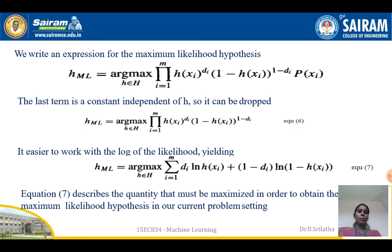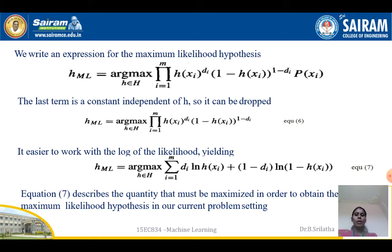We now rewrite the expression for the maximum likelihood hypothesis. h_ML = argmax over h in H of P(D|h), which is given by equation 5. The last term, P(xi), is constant and independent of h, so it can be dropped or discarded. Rewriting without that term gives equation 6. It is easier to work with the log of the likelihood.